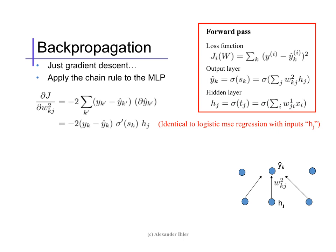Now, we can take the derivative of the loss j with respect to one of the parameters — say a weight in the second layer, denoted w2_kj, the weight of the second layer between hidden node j and output node k. Following the chain rule on the loss j, we get the sum over output nodes. The derivative of (y minus y-hat) squared is just (y minus y-hat), times the derivative of the interior, which is minus the derivative of y-hat. When we look at the definition of y-hat, it's sigma of sk. So we get the slope of sigma at point sk times the derivative of sk. And sk is just linear in the weights, so we get the hidden value hj.